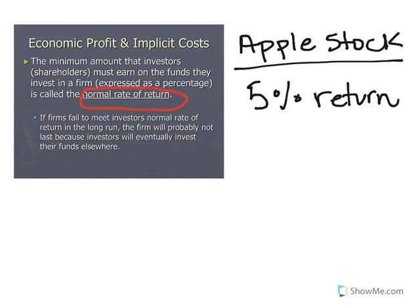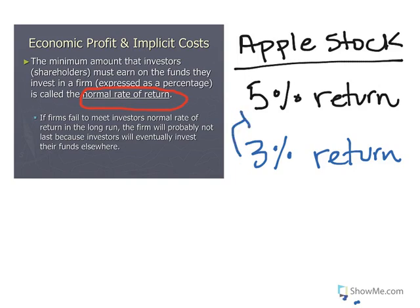Let's say next quarter Apple only gives me a 3% return. I'm still making money — I got a 3% return. However, I didn't get the return I was expecting to make.